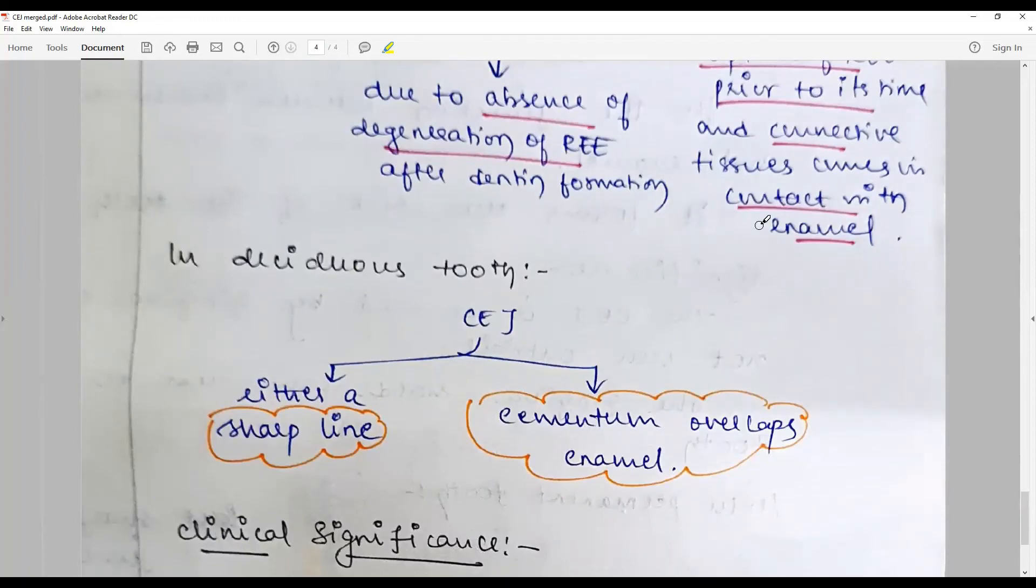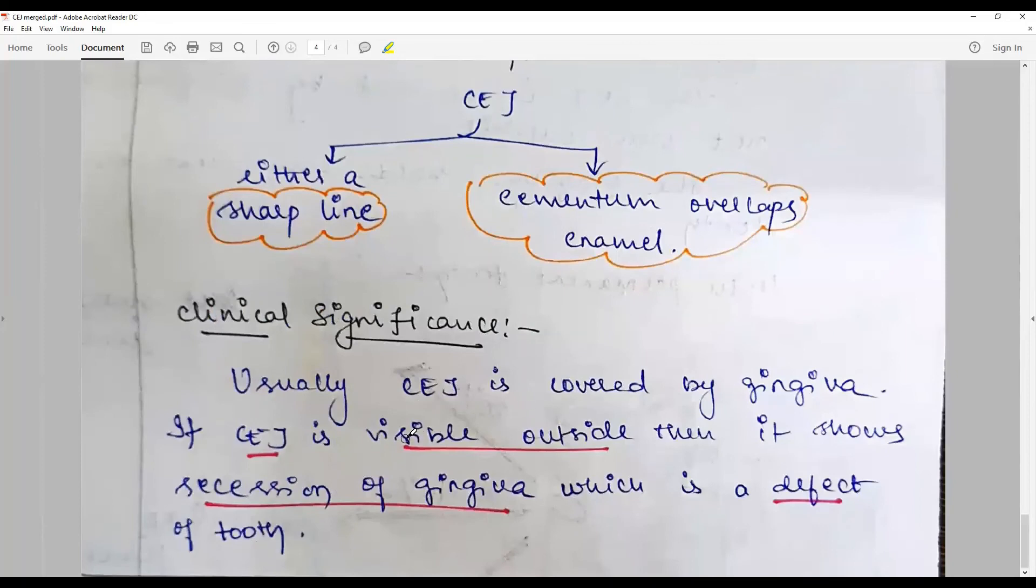The clinical significance: CEJ is covered by gingiva. If it is visible outside then there is a recession of gingiva which may be leading to sensitivity. With that we come to the end of the discussion on cemento-enamel junctions and cemento-dentinal junctions. Stay connected with this channel for more questions and till then learn incrementally.